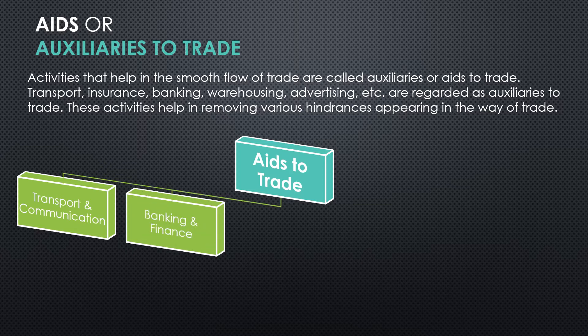The next aid is banking and finance. Banks and financial institutions provide credit facilities or loans to start or function different business activities. Banks help businessmen overcome the problems of funds — the hindrance of finance. There are different kinds of facilities available through banks which are used regularly in businesses, like issuing of bank drafts, discounting of bills, overdraft, cash credit limit, and arrangement of payments to foreign countries.